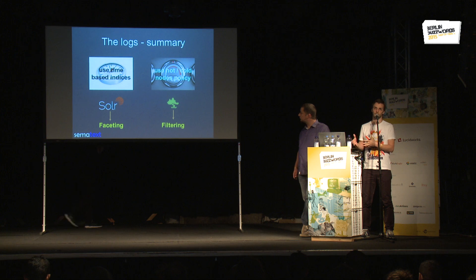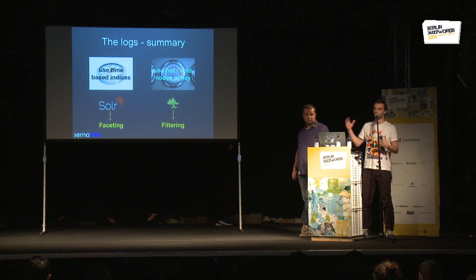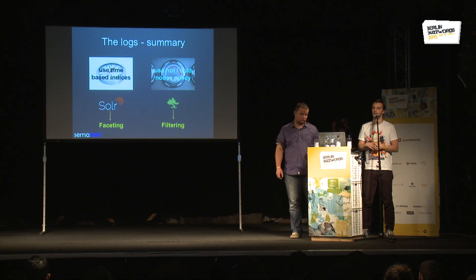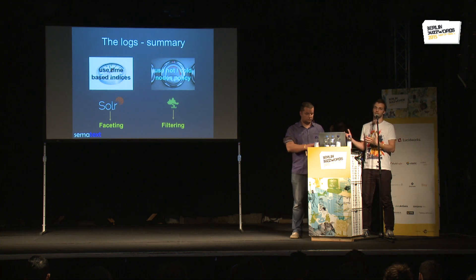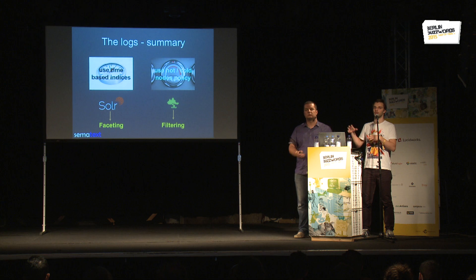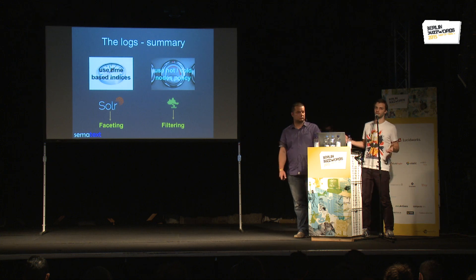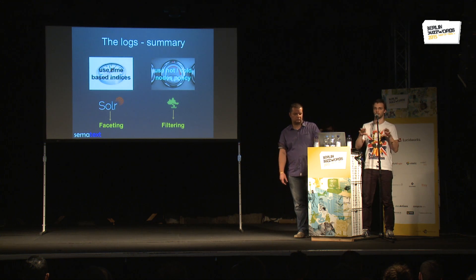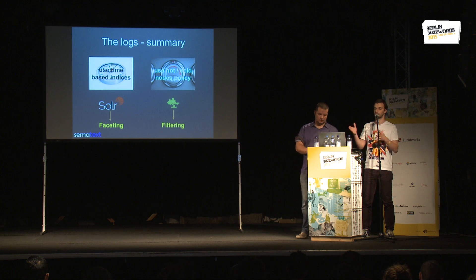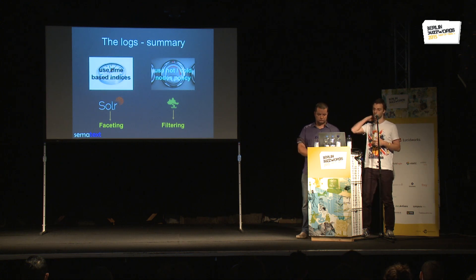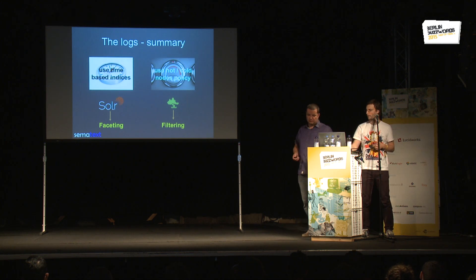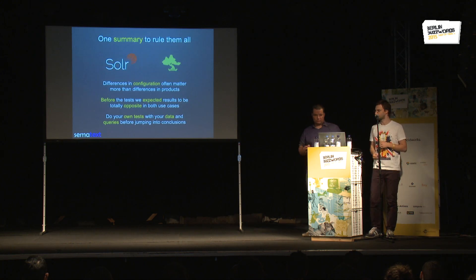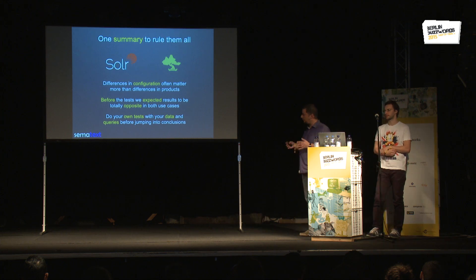To wrap up the logs use case: using time-based indices with a hot-and-cold nodes policy helps in both cases. Elasticsearch tends to be faster at filtering, and Solr tends to be faster at faceting. It is worth noting that Elasticsearch has more capable aggregations even compared to Solr 5.2 with nested facets — in this case we tried to compare common functionality just to look at the performance.